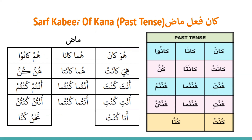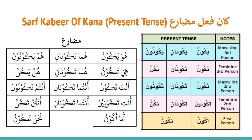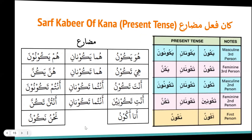These conjugations we call sarf kabir. Sarf kabir includes the fheli madhi — past tense — fheli mudare — present tense — commanding form, and forbidding form. In present tense, you will see the regular form — fheli mudare marfu — and mansoob and majzoom also. Let's take the first and most common one: kana.